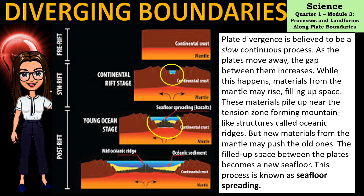The rising mantle materials pile up near the tension zone, forming mountain-like structures called oceanic ridges. New materials from the mantle may push the old ones, and the filled space between the plates becomes a new seafloor. This process is known as seafloor spreading.